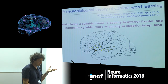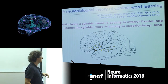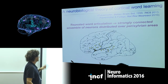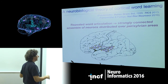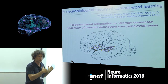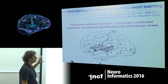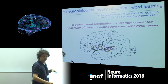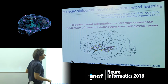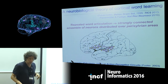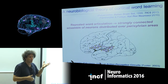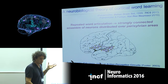The theory says that when you have concomitant activity in the brain and a Hebbian learning mechanism, these patterns of activity will get associated together. This leads to the emergence of strongly connected ensembles of neurons distributed over perisylvian areas — areas around the sylvian fissure. These cell assemblies were hypothesized by Hebb and have also been called by Fuster as action-perception circuits.